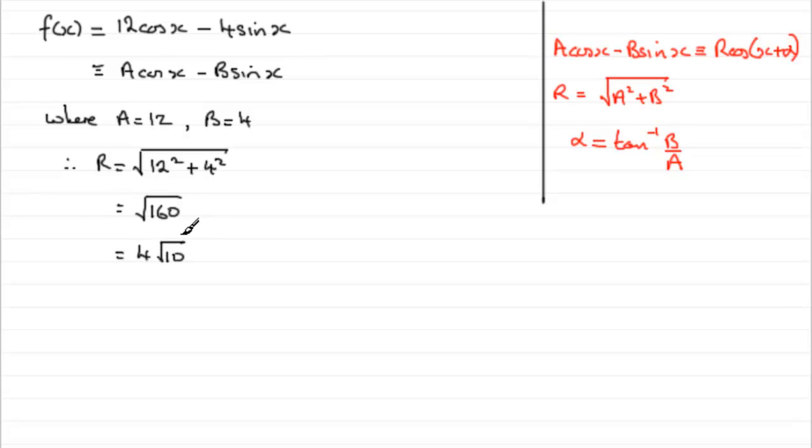But it's up to you, whatever one you want to leave it as. When it comes to alpha, alpha then is the inverse tan of b over a. So, that's going to be the inverse tan of b, being 4, over a, which is 12. The inverse tan then of 4 twelfths.